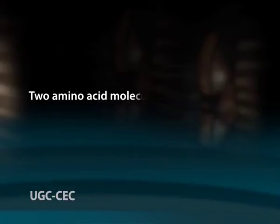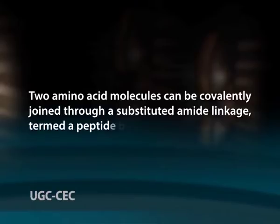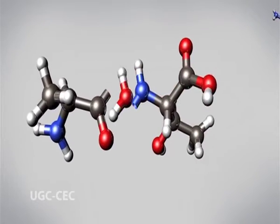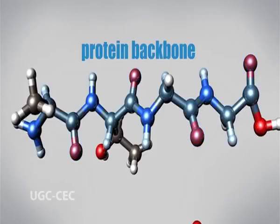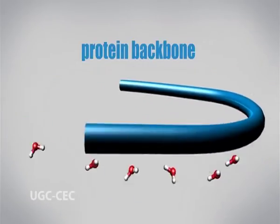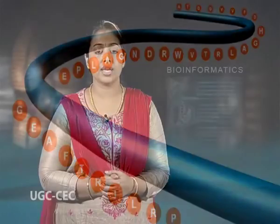Biologically occurring polypeptides range in size from small to very large, consisting of 2 or 3 to thousands of linked amino acid residues. Two amino acid molecules can be covalently joined through a substituted amide linkage termed a peptide bond to yield a dipeptide. Such a linkage is formed by removal of water or dehydration from the alpha carboxyl group of one amino acid and the alpha amino group of another. Peptide bond formation is an example of a condensation reaction, a common class of reactions in living cells.